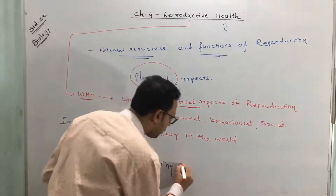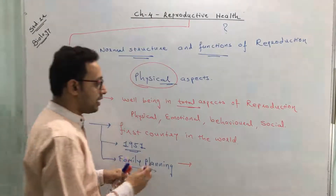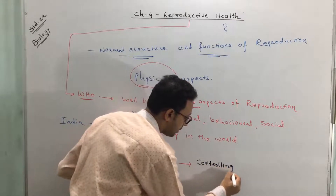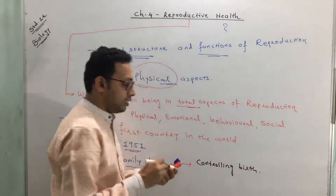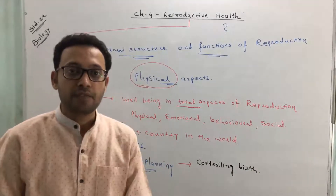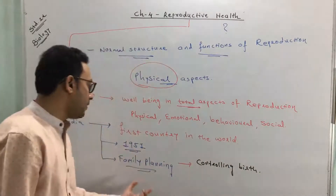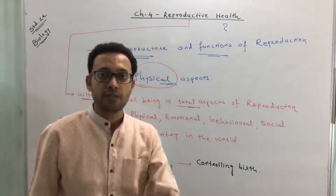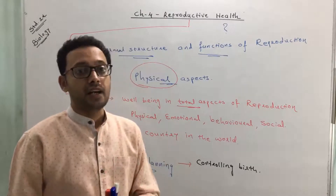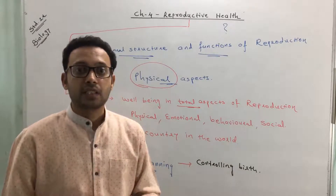Family planning was limited to certain aspects — mainly controlling the birth rate and restricting the size of a family. The main aim or goal of this program was to control the population in the country.